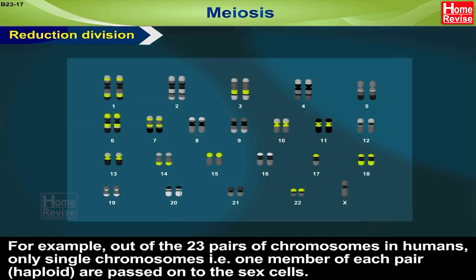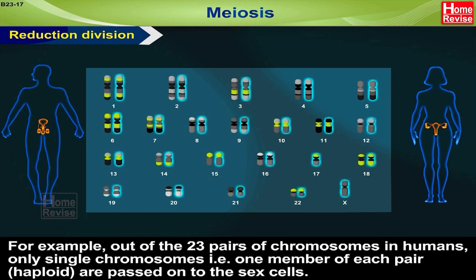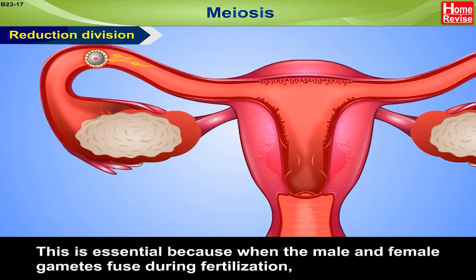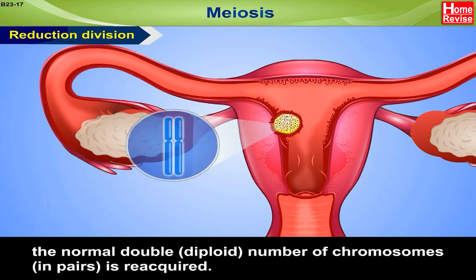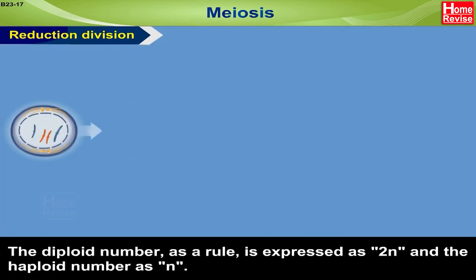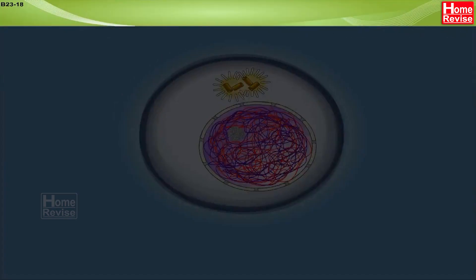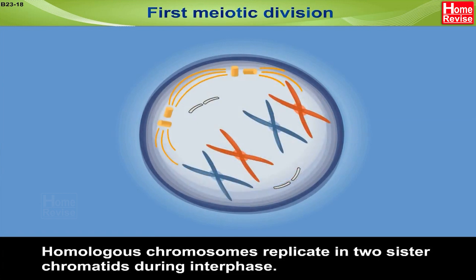For example, out of the 23 pairs of chromosomes in humans, only single chromosomes — that is, one member of each pair (haploid) — are passed on to the sex cells. This is essential because when the male and female gametes fuse during fertilization, the normal double (diploid) number of chromosomes in pairs is reacquired. The diploid number, as a rule, is expressed as 2N and the haploid number as N.